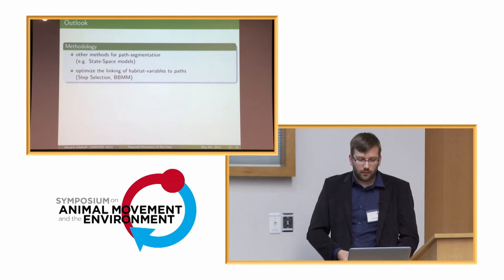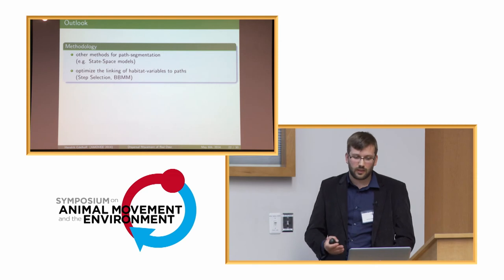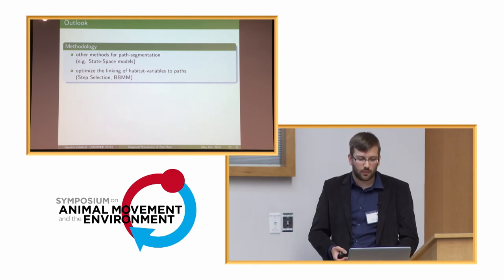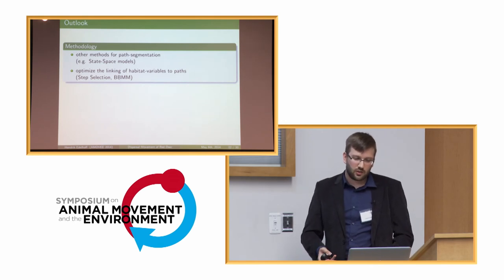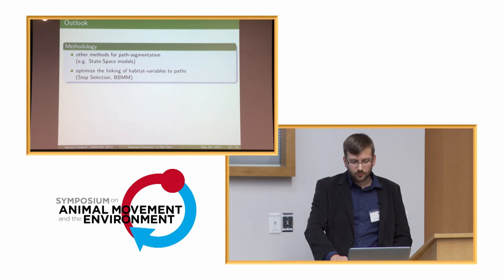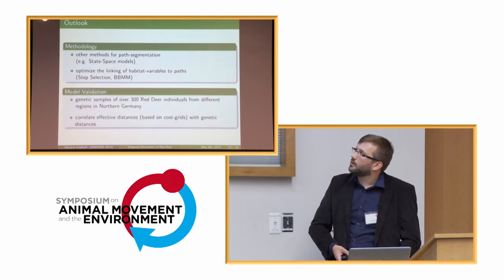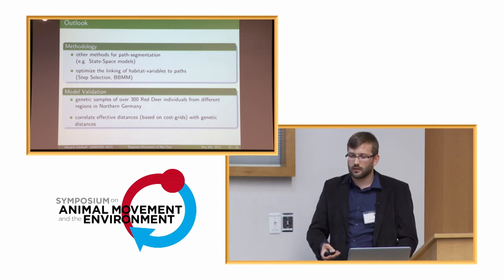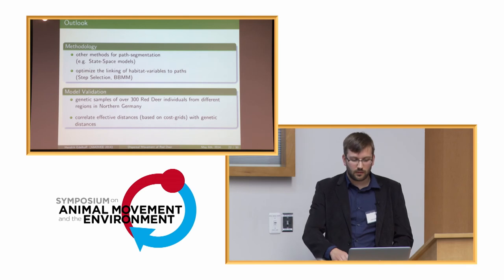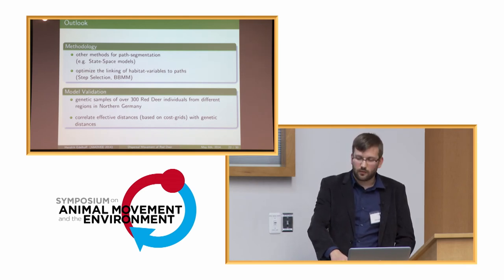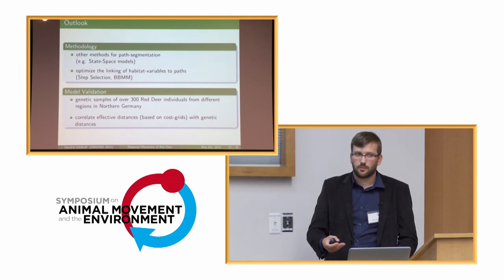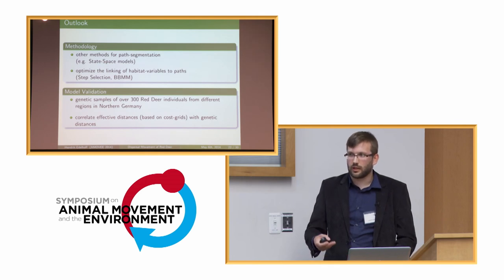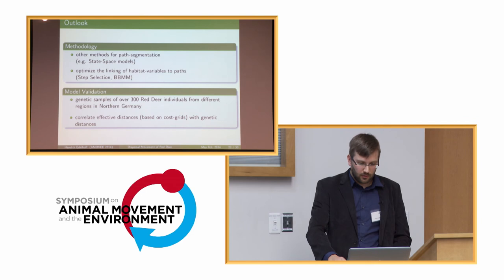In the near future, I plan to try different methods for segmenting paths besides BCPA — such as hidden state space models — and also optimize the linking of habitat variables to paths, possibly including step selection functions or Brownian bridge movement models. I currently have over 300 red deer genetic samples from the area, which will increase over the next winter. I will use these to define genetic distances between areas, link them to effective distances from the cost grids, and determine which approach best describes the genetic structure — potentially proposing methods applicable to other projects on the same topic.